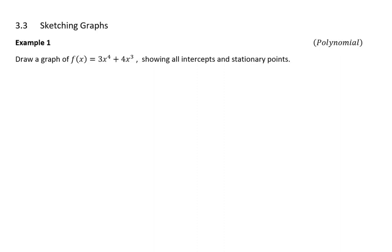I've written a little description on the side here because there are loads of different types of graphs. This first example is an example of a polynomial — it's not a rational function in that it's not a fraction where you have one function over another. It looks pretty much like a normal quadratic except this is to the power of four. The task is to draw the graph showing all intercepts and stationary points, and I should probably have written in points of inflection as well because we should label those if we have them.